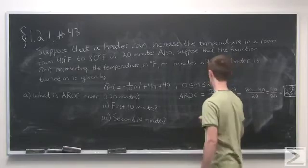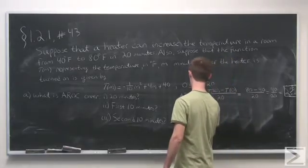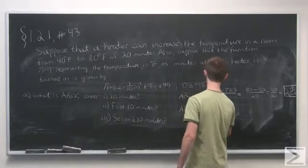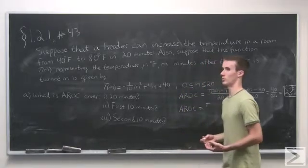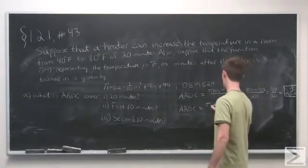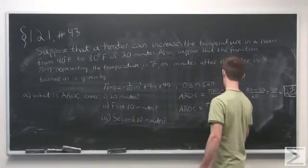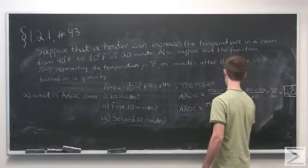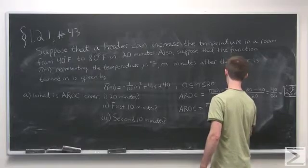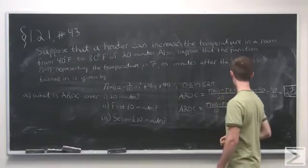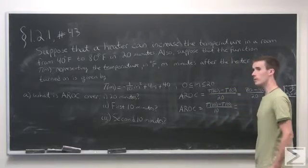For the first 10 minutes, we'll do a similar thing. Our time interval is 0 to 10, so the average rate of change is T(10) minus T(0), over the change in time, which is 10.